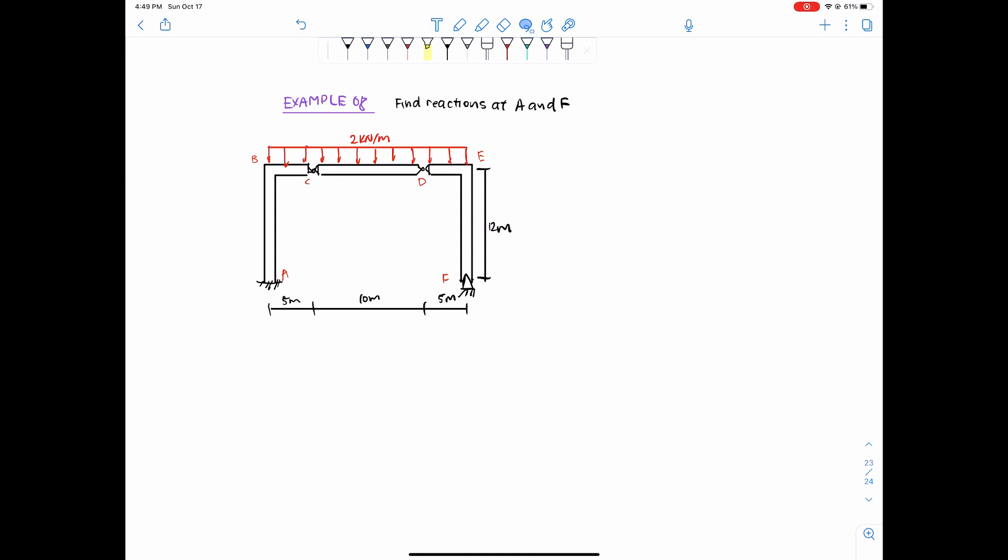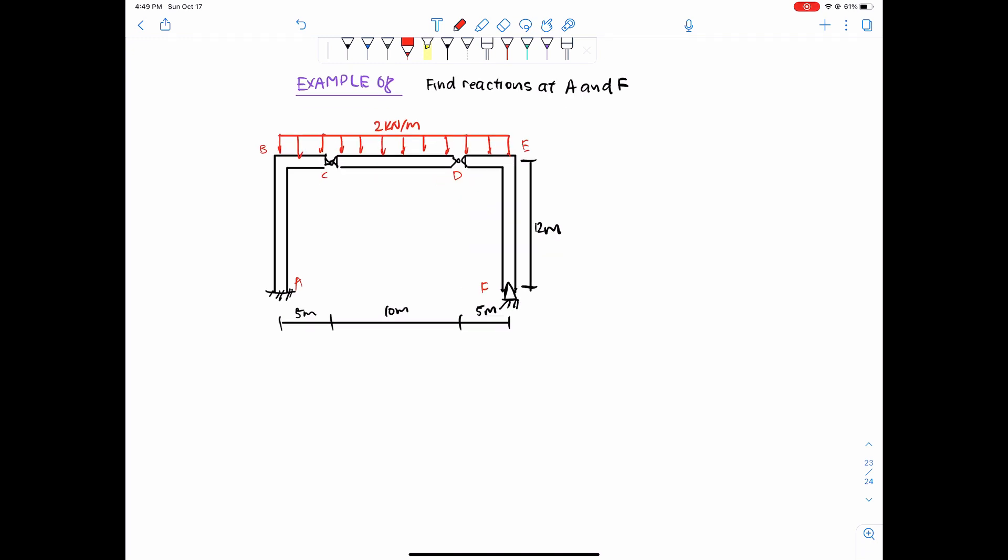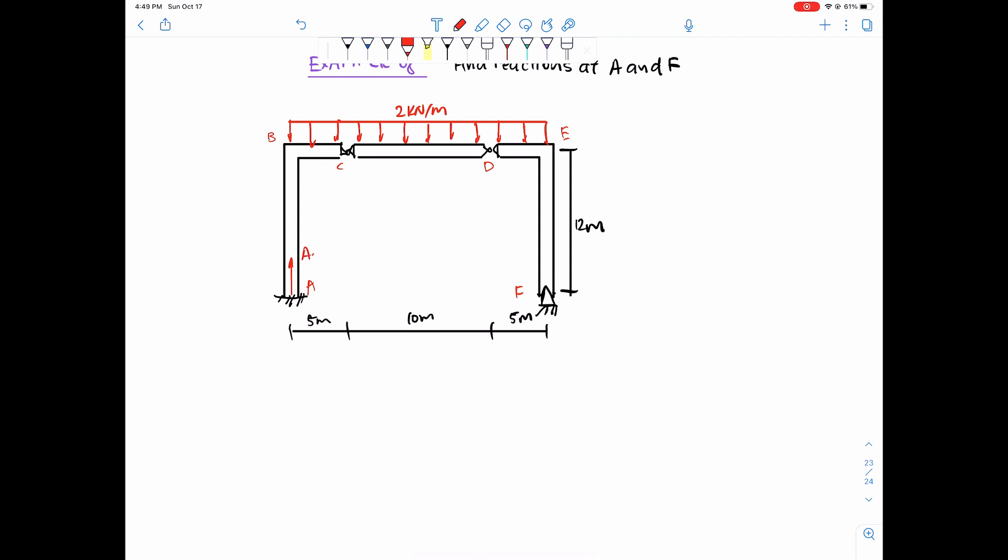Step number one is always label the reactions you are trying to find. In this case we have ay, ax, and then this is a fixed support, so it's also resisting against moment. Then we have fy and fx. Once we have one of these five reactions down, we have two pins.